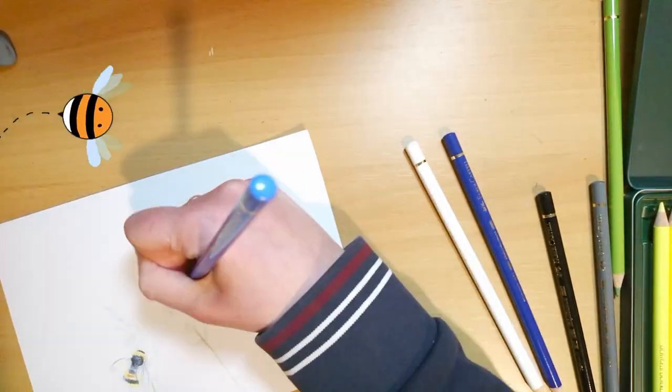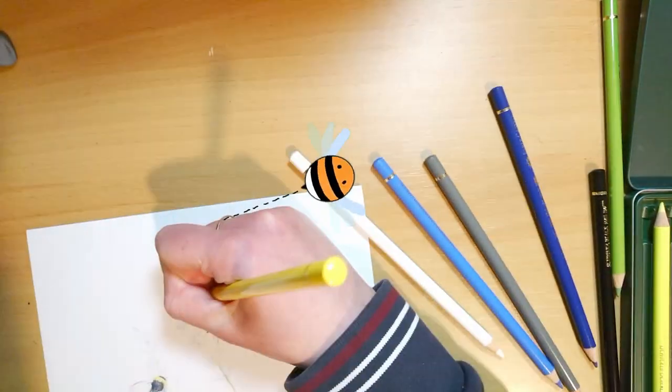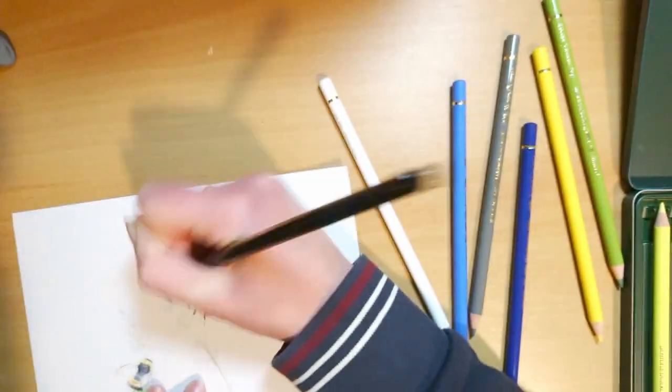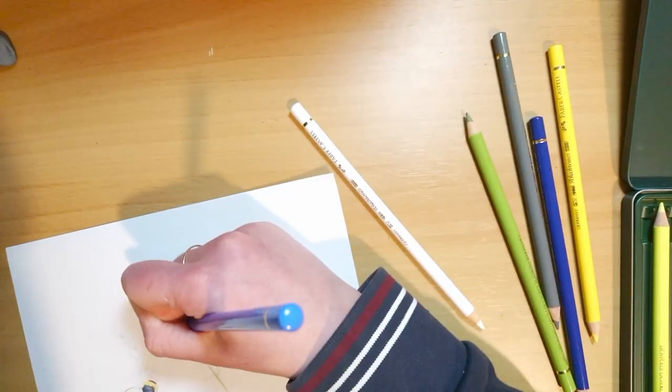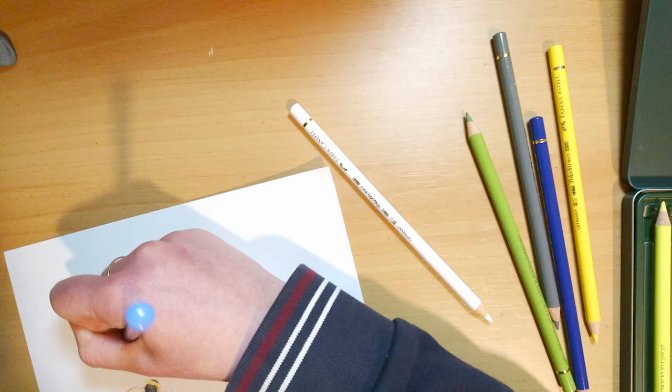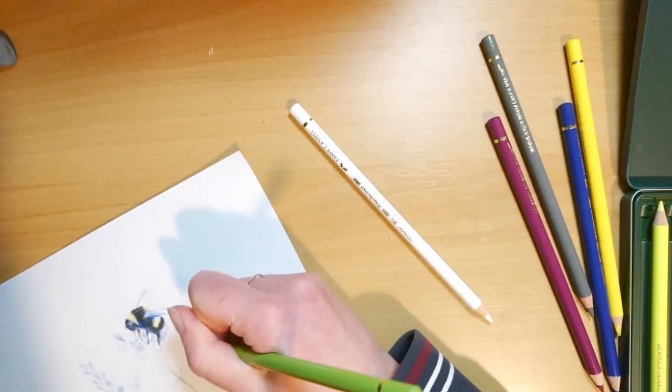One thing I did notice was that this pack doesn't have a purple. The closest it's got to this is magenta. But as these colors do layer nicely, I didn't find it too hard just to make my own purple.